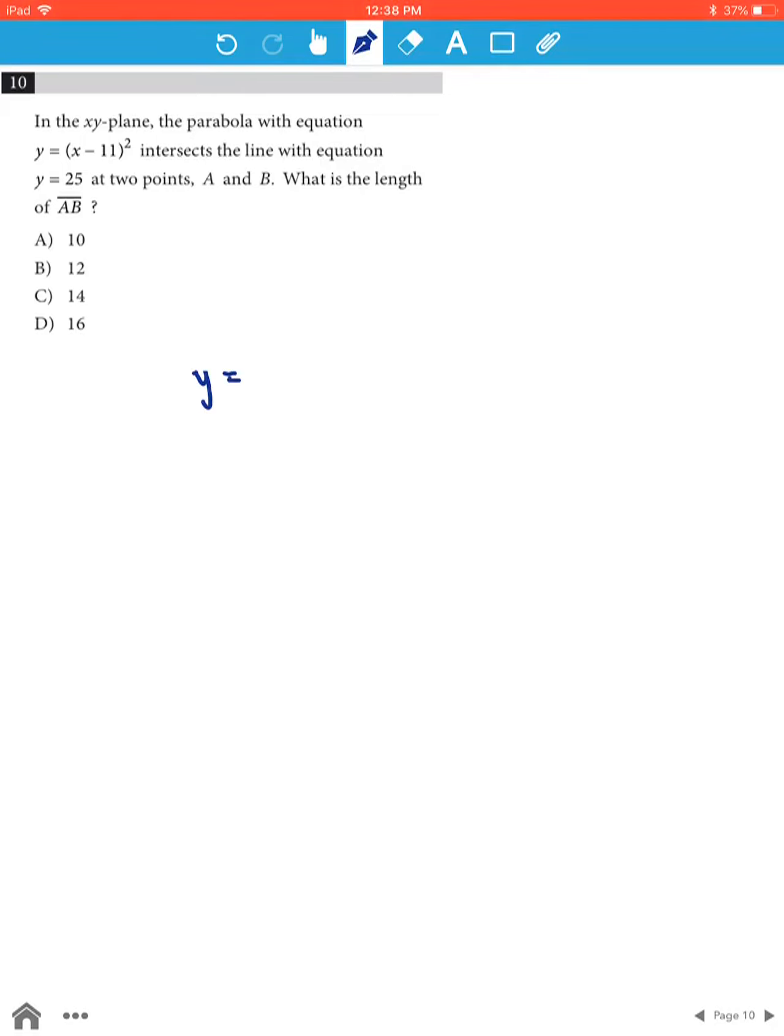In the equation y = (x-11)², we know that the line intersects at two points where y = 25. Therefore, when we substitute y = 25 in this equation, we need to solve for x.